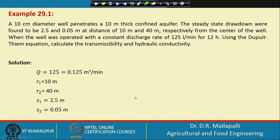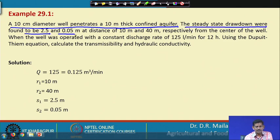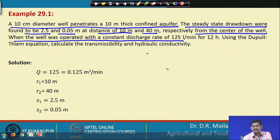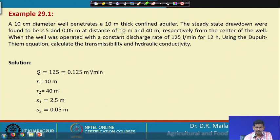Example 1: A 10-centimeter diameter well penetrates a 10-meter thick confined aquifer. Steady-state drawdowns were found to be 2.5 m and 0.05 m at distances of 10 m and 40 m respectively from the centre of the well, when operated at a constant discharge rate of 125 liters per minute for 12 hours. Using the Thiem equation, calculate the transmissibility and hydraulic conductivity.